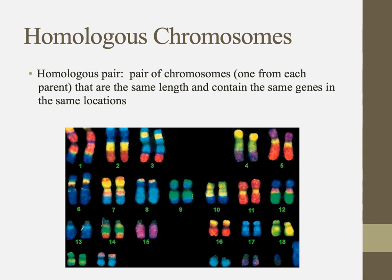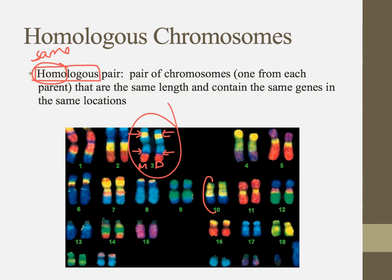We call those pairs homologous — homo meaning same. In a homologous pair, where we have one from the mom and one from the dad, they have the same genes in the same location. That's what it means to be homologous. Now, they may not be the same alleles — for instance, one might have an allele for type A blood and one might have an allele for type O blood. But those genes will be present in the same place and on the same chromosome, and that's what it means to be a homologous pair.